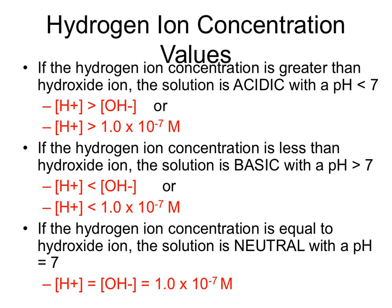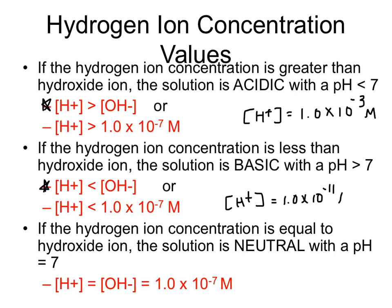For an acid, which has a pH of less than 7, the hydrogen ion concentration must be greater than the hydroxide ion concentration, and will be greater than 1 times 10 to the negative 7th molarity — for example, 1 times 10 to the negative 3rd molarity. For a base, the pH is greater than 7 and the hydrogen ion concentration is less than the hydroxide ion concentration, less than 1 times 10 to the negative 7th — for example, 1 times 10 to the negative 11th molarity. If your solution is neutral, the hydrogen and hydroxide ion concentrations equal each other and a pH of 7 exists.